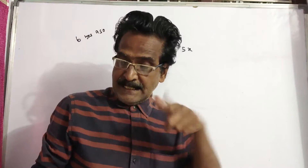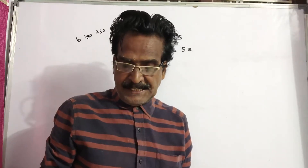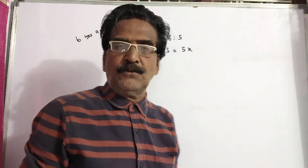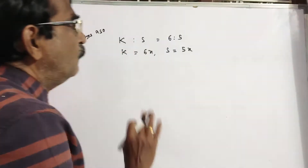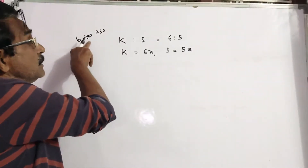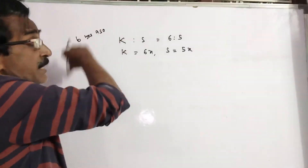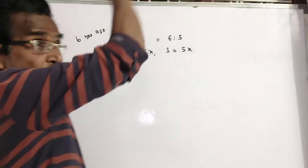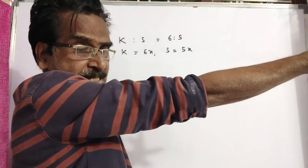Four years hence, the ratio will be eleven to ten. From six years ago to four years hence means a difference of ten years.